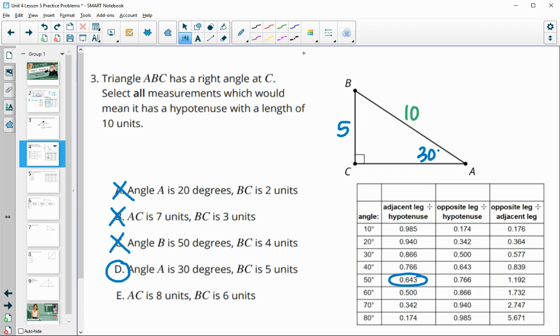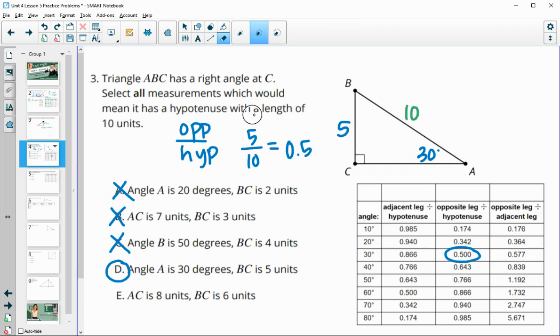You could also check it using your right triangle table if you wanted. The 5 is the opposite, so we have the opposite over the hypotenuse here. Opposite being 5, hypotenuse being 10, gives us a decimal of 0.5. And then if I check the 30-degree angle, opposite over hypotenuse is 0.5, so that part matches as well. So that information is good.